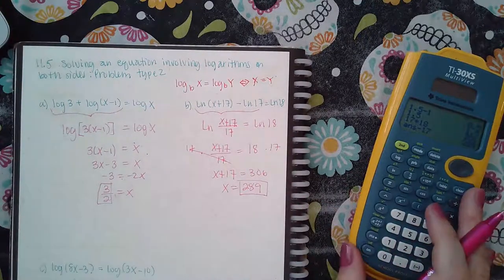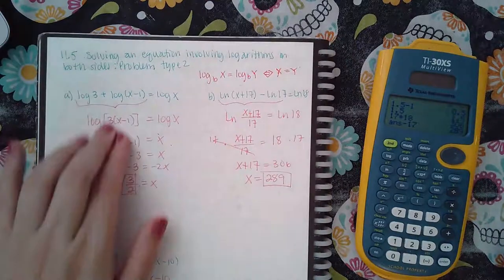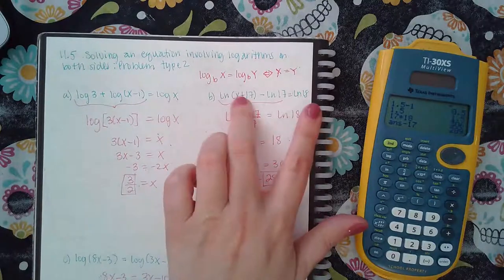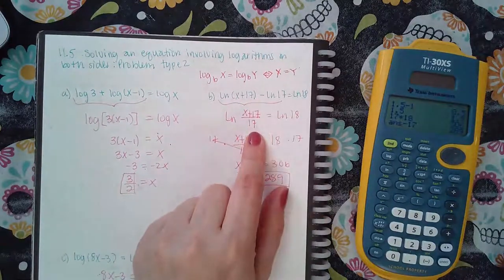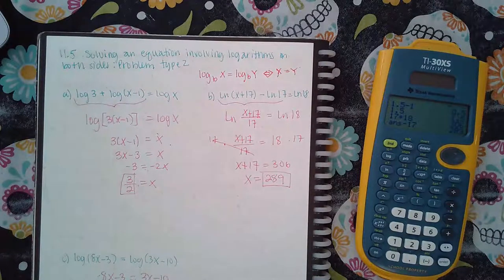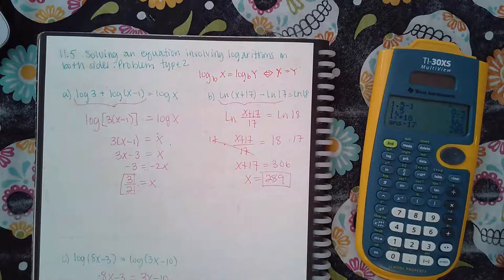But the idea is to either combine them using the product property or combine them using the subtraction quotient property, and then you just drop the logs because you have them on both sides. In order for the left side to equal the right side, that argument has to be the same.